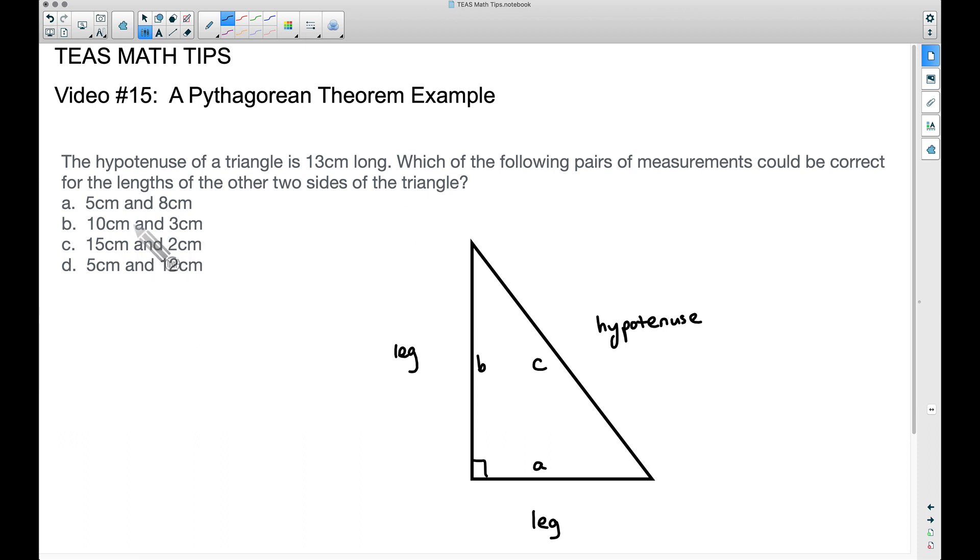So we have some choices here and I have a right triangle drawn down here and the reason why this is a right triangle, even though the problem doesn't say it's a right triangle, it in fact is because of the word hypotenuse.